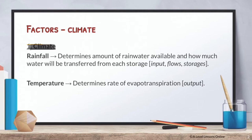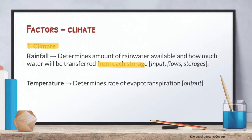Climate in the form of rainfall: essentially, rainfall very simply determines the amount of water available and how much water will be transferred from each storage — from your input, infiltration, percolation, all the way to your soil moisture storage. For instance, if there's a lack of rainfall, there will be a lack of infiltration, hence a lack of soil moisture storage, percolation, base flow, and groundwater storage. On the other hand, high rainfall would produce the complete opposite.